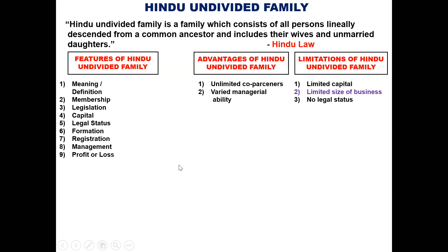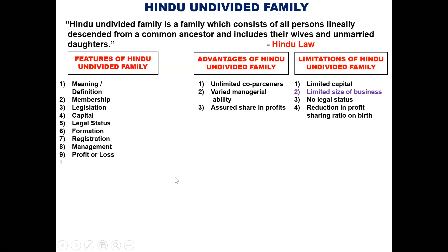Profit or loss: One advantage is the assured share — if any child has been born into the family, they have an assured share in profit. But the disadvantage is that when a child is born, your profit share reduces. For example, 100 divided by 4 becomes 100 divided by 5. So, there is a reduction in the profit-sharing ratio on birth.